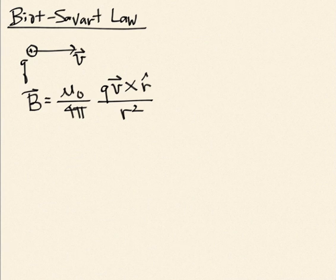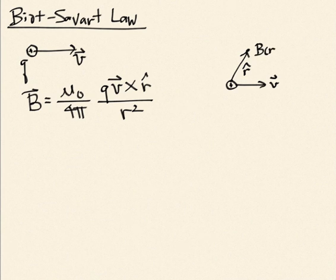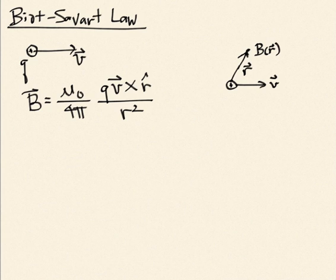I need to define R̂ and R². If you have your moving point charge, R̂ is the unit vector that points to the location where you're observing the field. The vector R points from the location of the point charge to the observing location, and R̂ is just the unit vector in that same direction — formally, R divided by its magnitude.